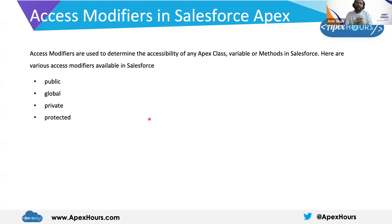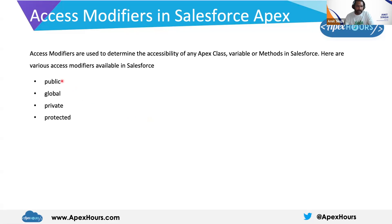Access modifiers are basically used to define the visibility or accessibility of an Apex class, a variable, or a method in Salesforce. There are four main access modifiers available in Salesforce: public, global, private, and protected.